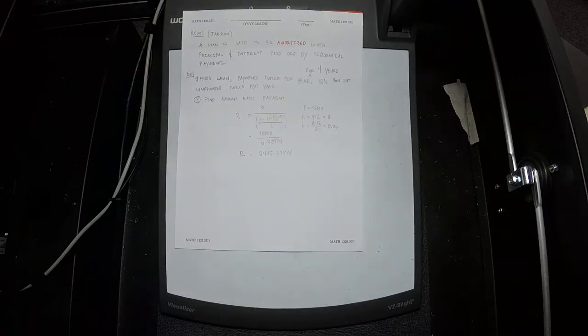So back to the problem. We're going to use R = P divided by [1 minus (1+i)^(-N)] divided by i.